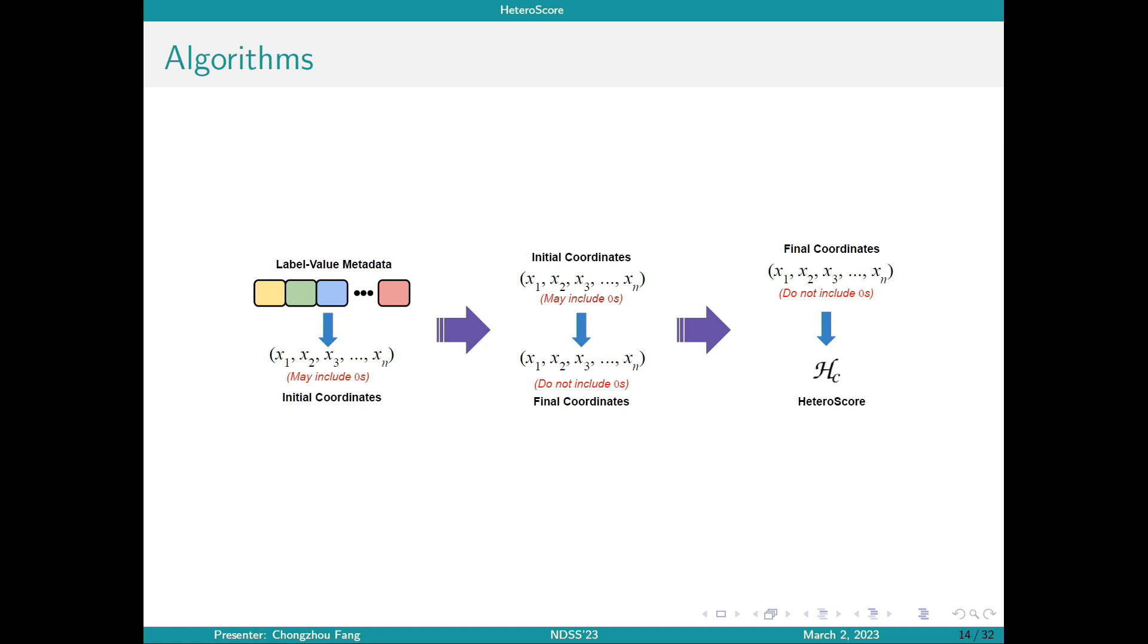The algorithm to calculate heteroscore consists of three phases, as we show on this page. First, the metadata is parsed and initial representations are assigned. These vectors may include unwanted zero components, since the metadata information may not be complete for every server. Second, these coordinates will go through some further processing algorithms to generate the coordinates. Then, these process vectors will be utilized directly in the calculation of heteroscore shown above, and eventually a value between 0 and 1 is produced as the output representing the heterogeneity level of a cluster.